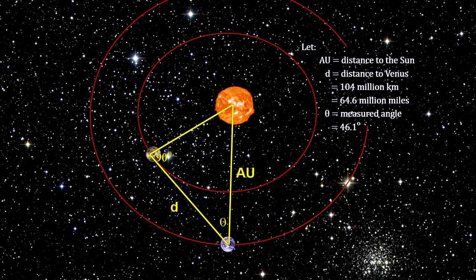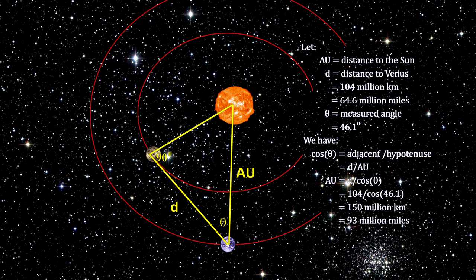The angle at the Earth is easily measured, 46.1 degrees. Now, using trigonometry, one can determine the distance: 150 million kilometers, or 93 million miles.